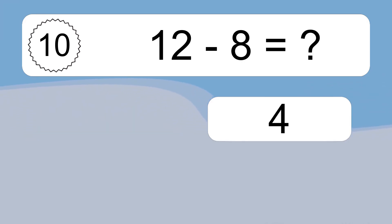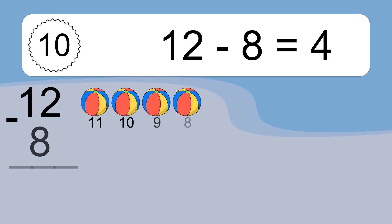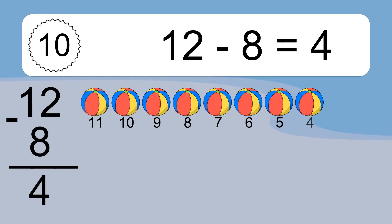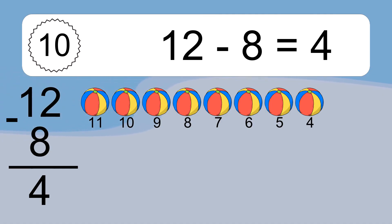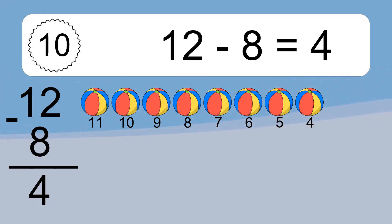12 minus 8 equals what? 12 minus 8 equals 4. Let's count it: 11, 10, 9, 8, 7, 6, 5, 4.